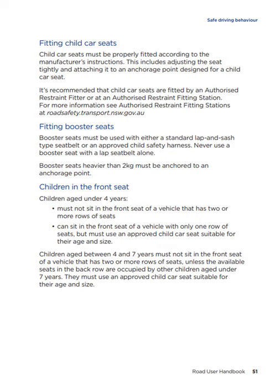Fitting child car seats. Child car seats must be properly fitted according to the manufacturer's instructions, including adjusting the seat tightly and attaching it to an anchorage point designed for a child car seat. It's recommended that child car seats are fitted by an authorised restraint fitter or at an authorised restraint fitting station. Fitting booster seats: booster seats must be used with either a standard lap and sash type seatbelt or an approved child safety harness. Never use a booster seat with a lap seatbelt alone. Booster seats heavier than 2kg must be anchored to an anchorage point.